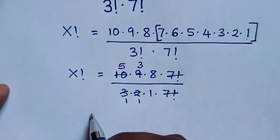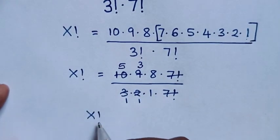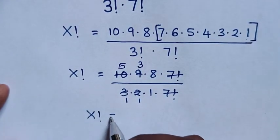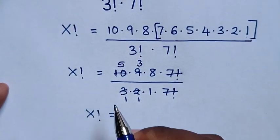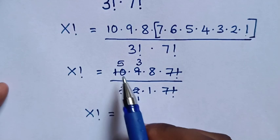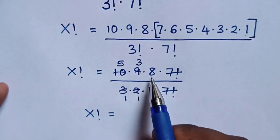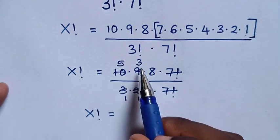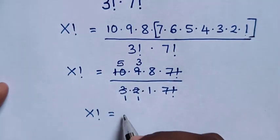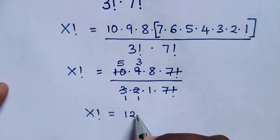Then x factorial equals 5 times 8 is 40, and 40 times 3 is 120.